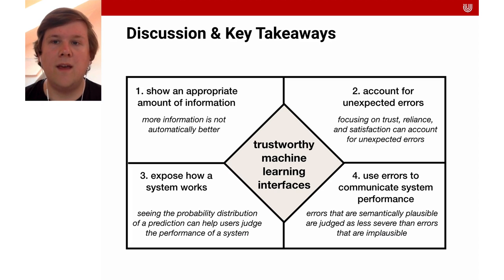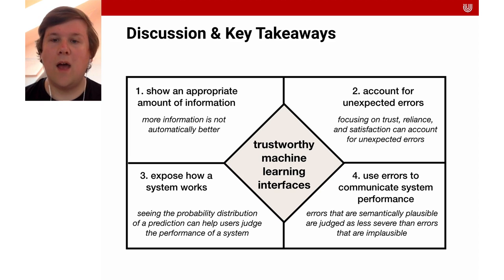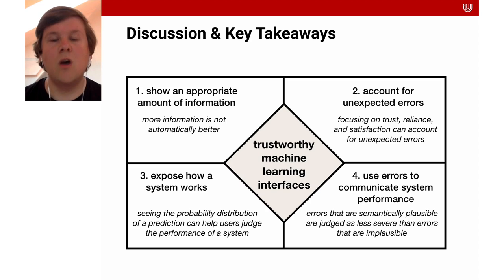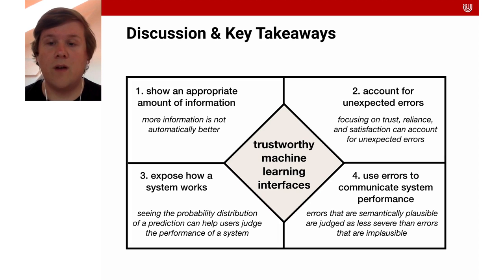For the discussion and key takeaways, we found that trustworthy machine learning interfaces should show an appropriate amount of information, account for unexpected errors, and expose how the system works. Errors could be used to communicate system performance — semantically implausible errors, like a cat misclassified as an airplane, could alert users to situations where a system is not trustworthy. Results showed that participants prefer visualizations that expose the statistical nature of ML systems by indicating the probability distribution of the top three predictions, over action-oriented visualizations that only show the top prediction. Optimizing the plausibility of errors could be an alternative to full decision explanations.